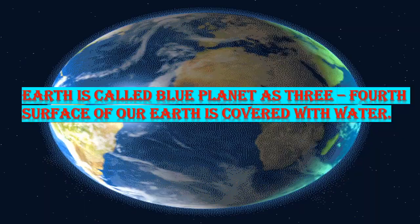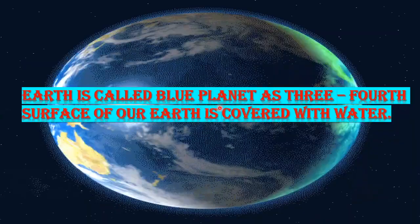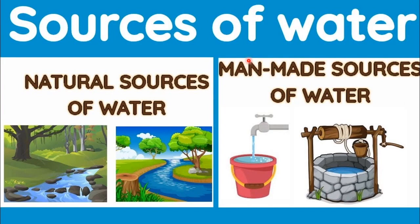Earth is called the blue planet as three-fourths of the surface of our earth is covered with water. Now let's learn about different sources of water. There are two types of sources: natural sources of water and man-made sources of water.